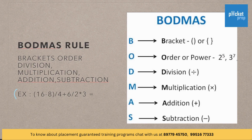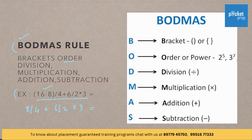Here is an example: 16 minus 8 divided by 4 plus 6 divided by 2 into 3. According to BODMAS rule, we have to solve the ones in the bracket first. So 16 minus 8 is equal to 8. We have no powers or orders here. 8 by 4 plus 6 by 2 into 3. Then comes division in the order, so 8 by 4 and 6 by 2 are the things which should be solved first.